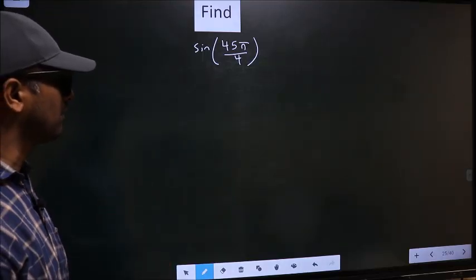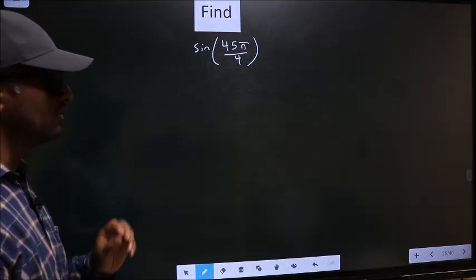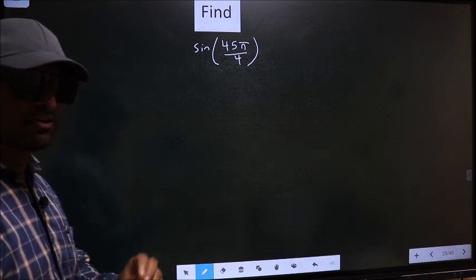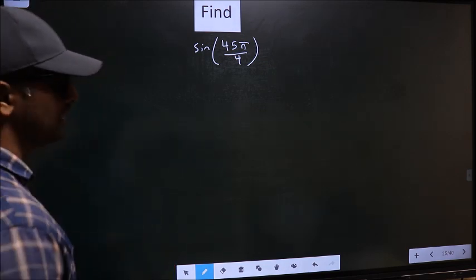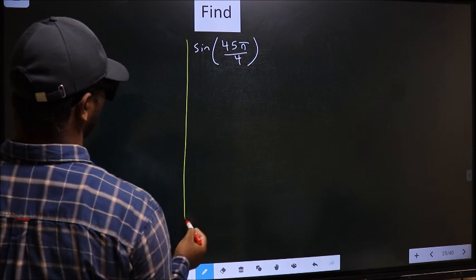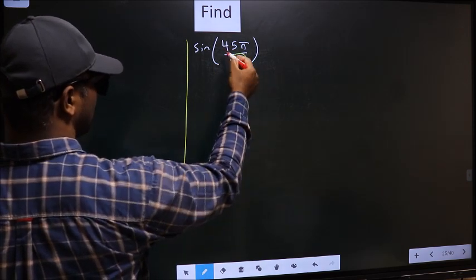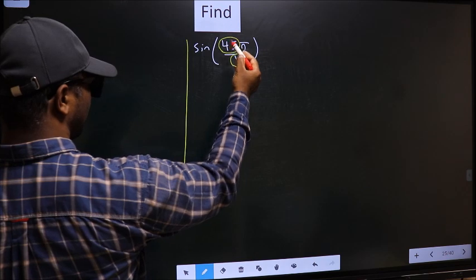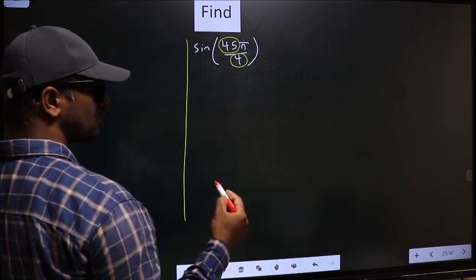Find sin 45π/4. To find this, we should follow this method. See, in the denominator, we have 4. In the numerator, 45. Now you should check, 45 is close to which multiple of 4?